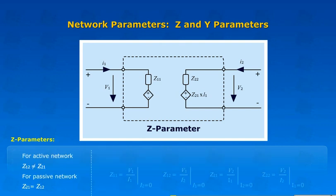For active network, Z12 is not equal to Z21. For passive network, Z21 is equal to Z12.